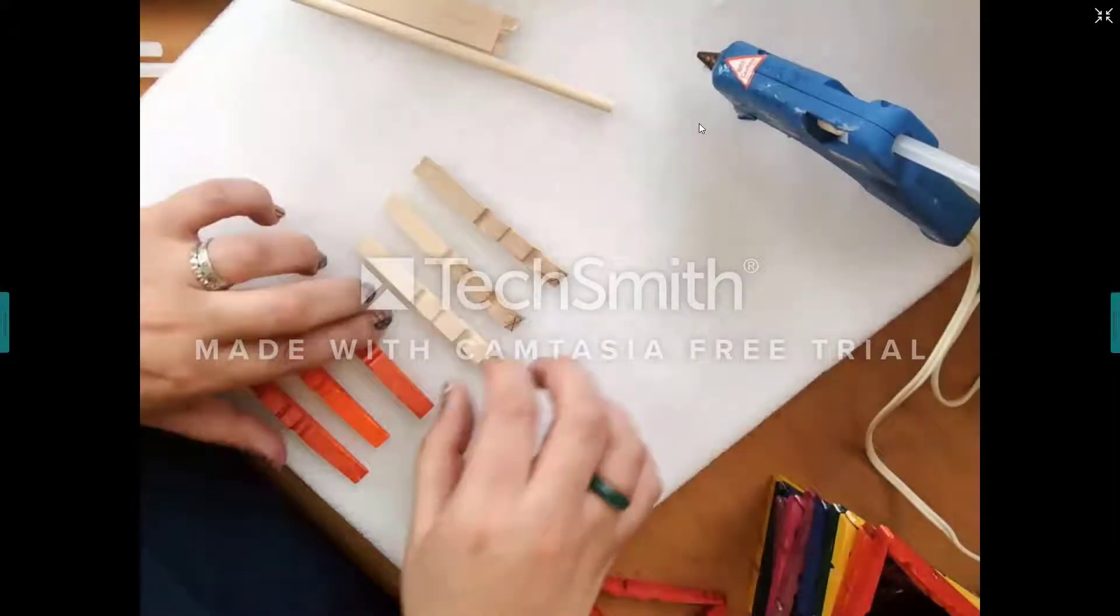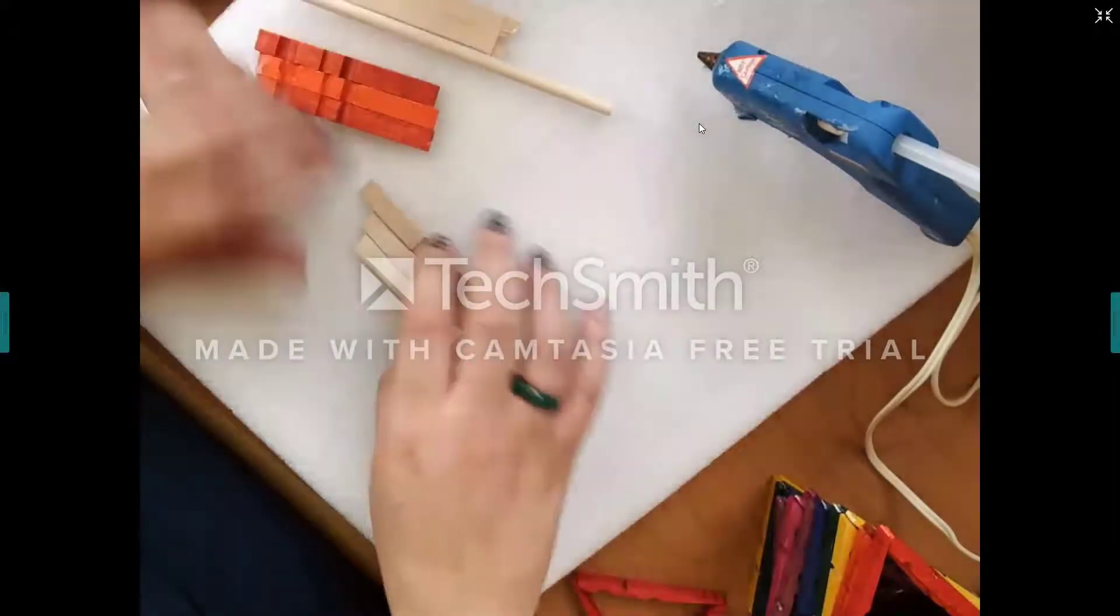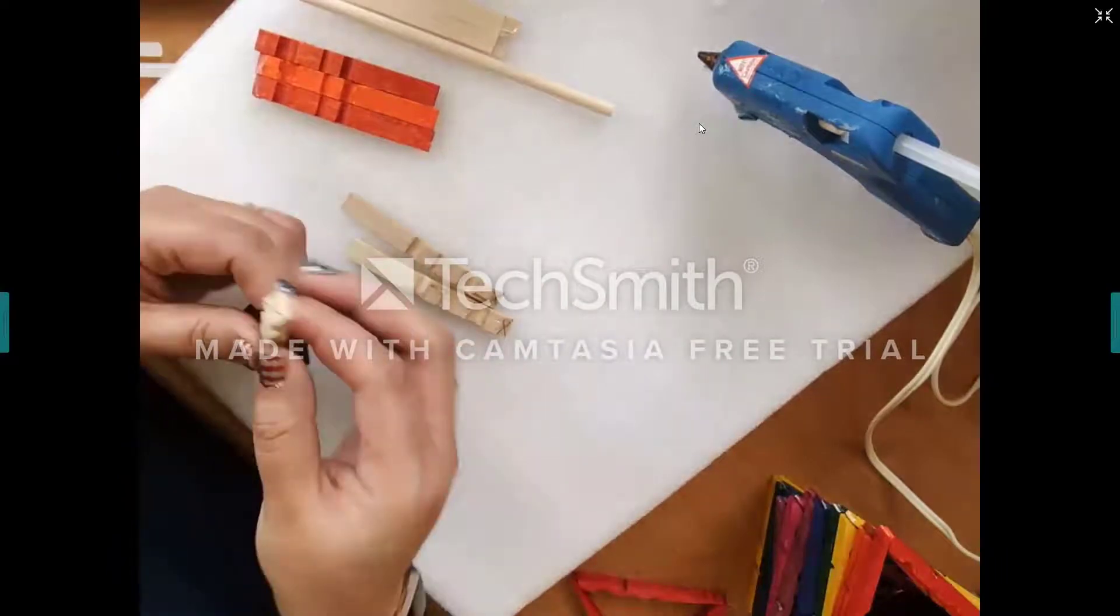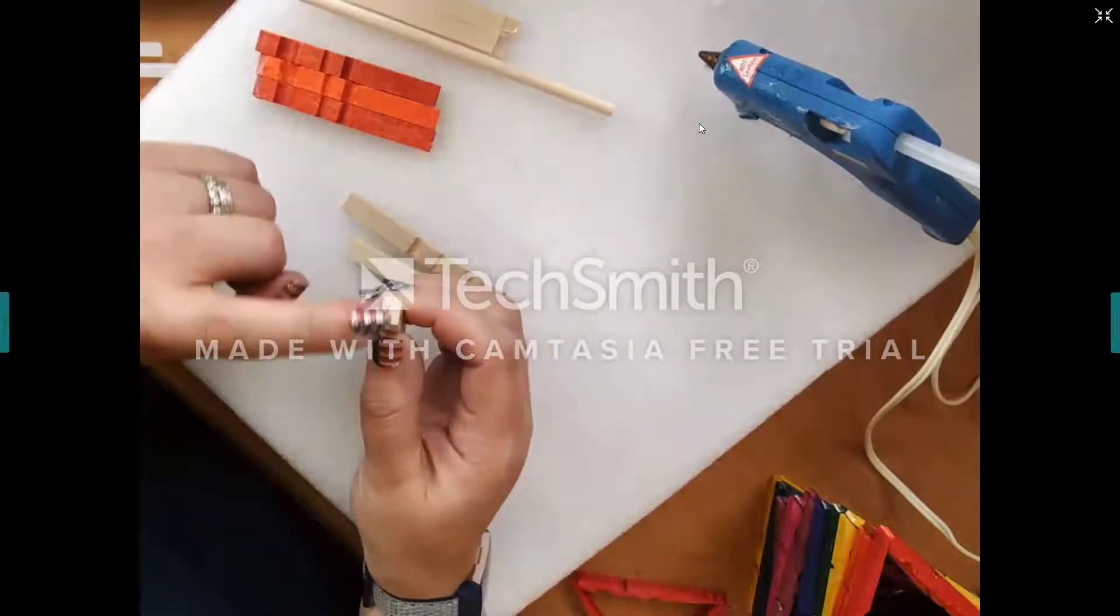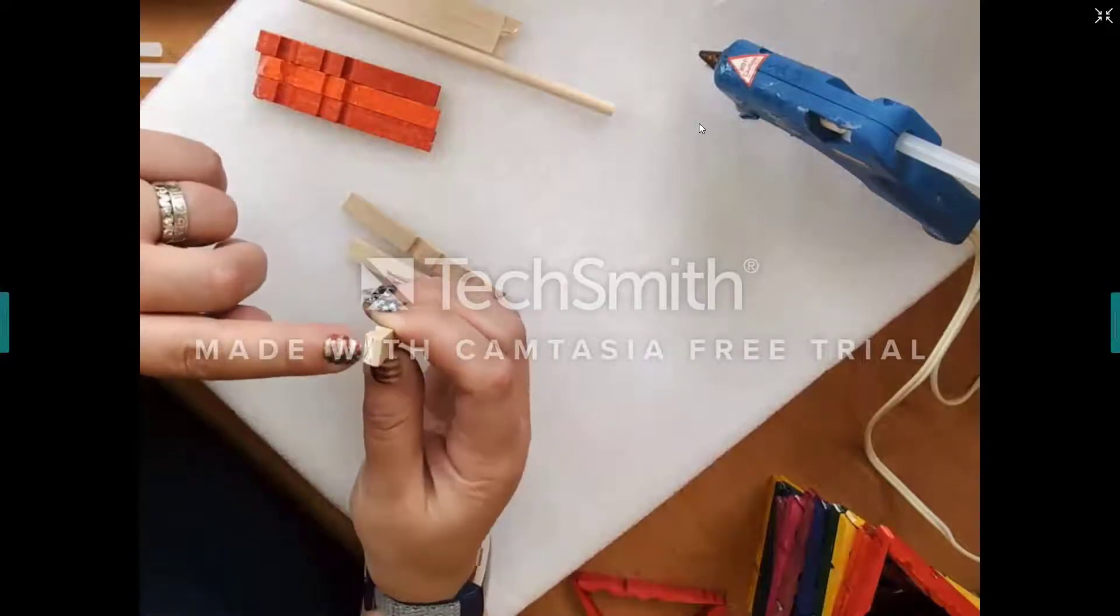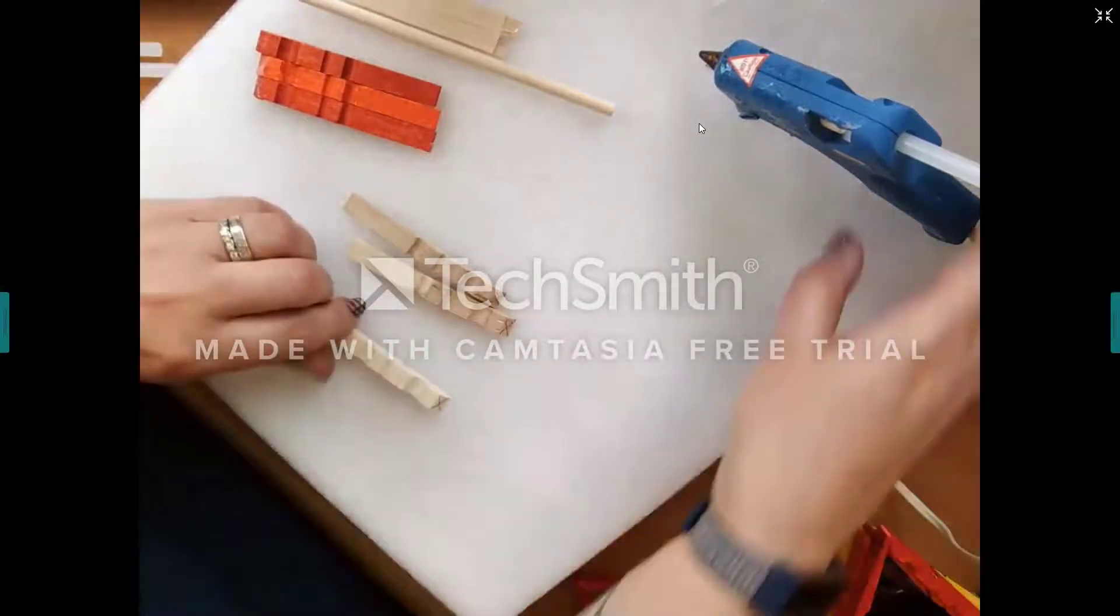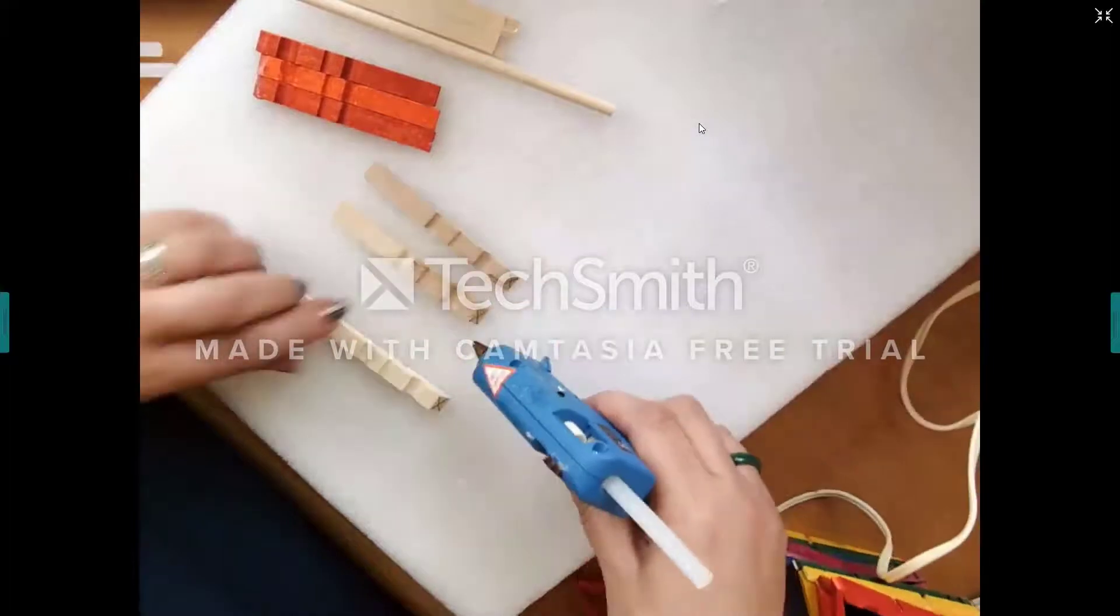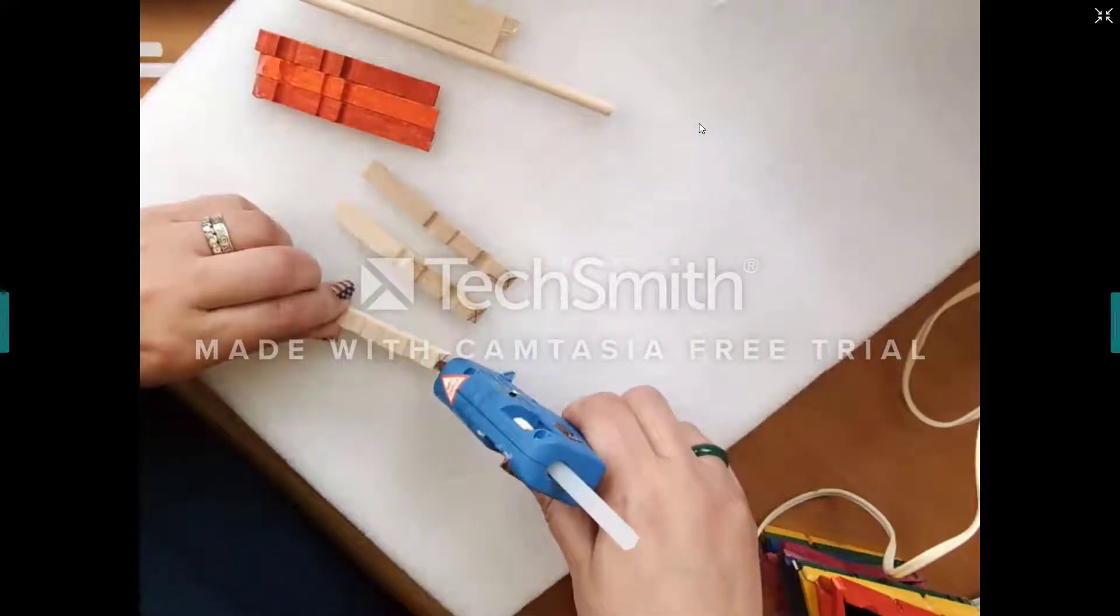Okay, so what you're going to do is each triangle is made out of three pieces of clothespin. And you want to put the glue on this part here where I put the X. So not the bottom end, but the next one up. I'm going to put the glue on both sides. I'm going to do that to three pieces.